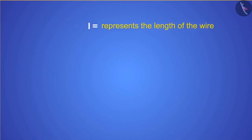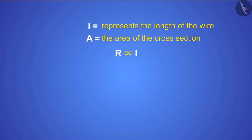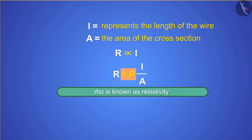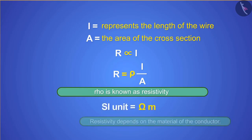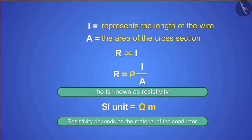This can be written mathematically. If l represents the length of the wire and A is the area of the cross-section, then resistance is directly proportional to length and inversely proportional to area A. A constant, represented by rho (ρ), is introduced to remove the sign of proportionality. Rho is known as resistivity. The SI unit of resistivity is the ohm-meter. Resistivity depends on the material of the conductor.